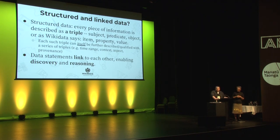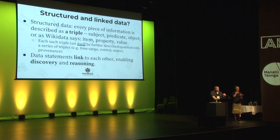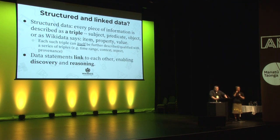Each such triple in itself can be further described as necessary, or qualified with a series of additional statements — for example, to express when this fact was true over time. Obama is no longer the President of the United States but he was at one point. We can express and model that in Wikidata. We can also model things like provenance, and accommodate multiple versions of facts, each with its different provenance and source.